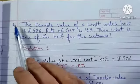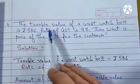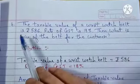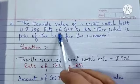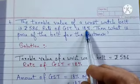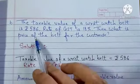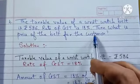Students, now we will see Question number 4. The taxable value of a wristwatch belt is Rs. 586. Rate of GST is 18%. Then what is the price of the belt for the customer?